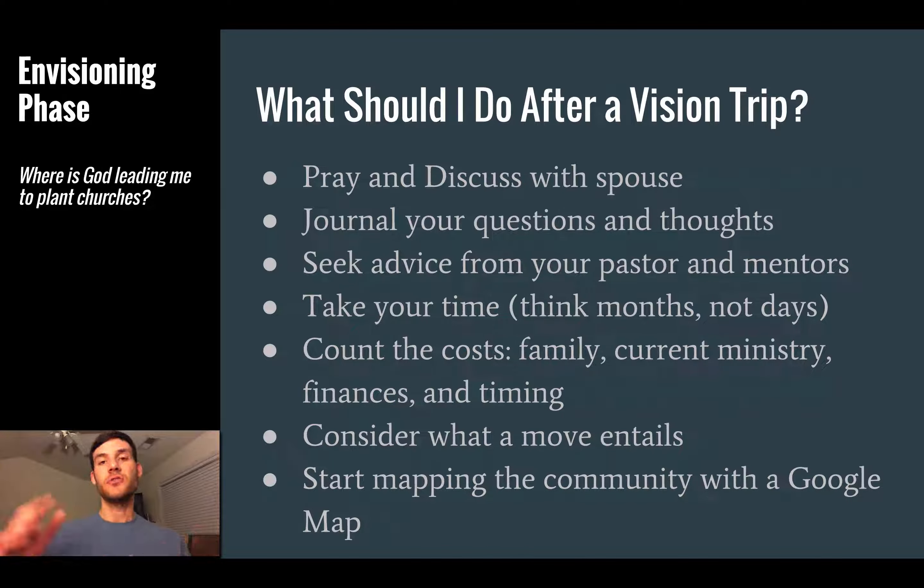The last thing to transition us to the second half of this lecture is to start mapping the community with a Google Map. We talked about community mapping in another lecture with Mike Sowers from the Baptist State Convention of North Carolina — his approach is more on-the-ground mapping. I want to show you how I've done that using a simple Google Map. Here is one that I made for Calgary — I started making this several months ago after one of the vision trips, just plotting things down. I call it 'Saturate Calgary' as a landing name for what we're looking to do.